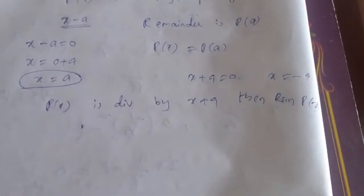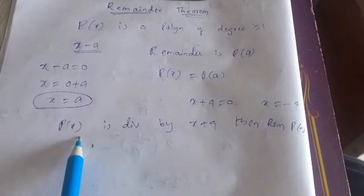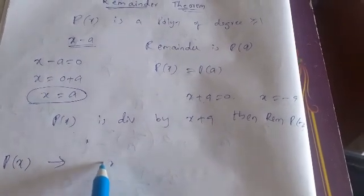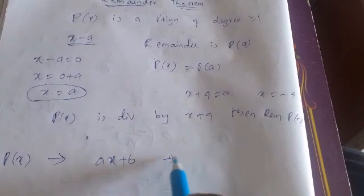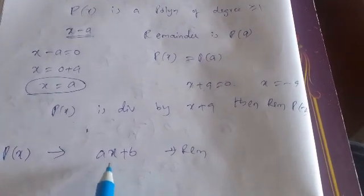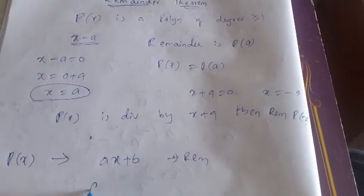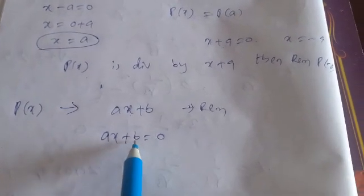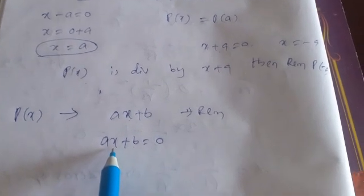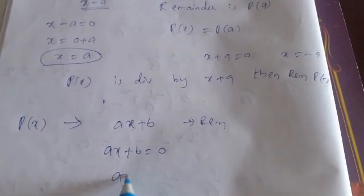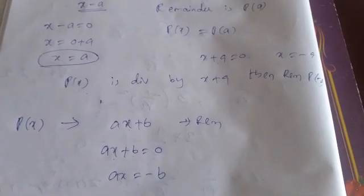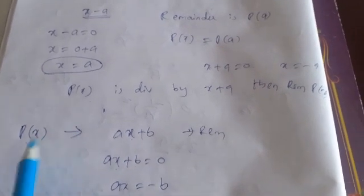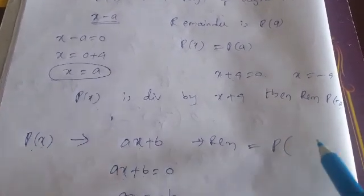P of minus A is the remainder when P of X is divided by X plus A. If P of X is divided by AX plus B, then find the zero of AX plus B: take AX plus B equals 0, take B to the right side, so AX equals minus B, then X equals minus B by A. Put X equals minus B by A in P of X — that is the remainder, P of minus B by A.